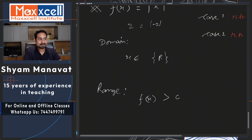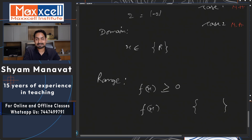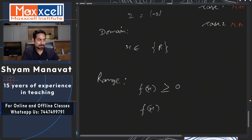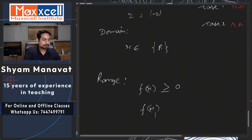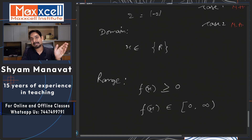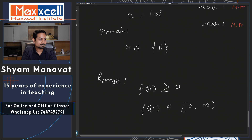So the range of f of x equals mod of x will be 0 to infinity — it is always greater than or equal to 0. I cannot write this using a curly bracket because curly brackets denote a specific set of individual values, not a continuous range. So I write the range as a closed bracket from 0 to infinity — including 0. It can be 0 or any positive number, but it cannot be negative. That is the range for this question.